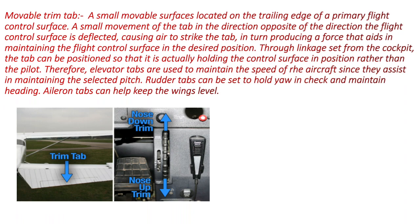Similarly, when the aircraft deflects from the level flight attitude and its nose moves up, the pilot sets the control wheel in the nose down trim position so that the trim tab moves up. The air strikes the trim tab and the aerodynamic forces move the elevator down. By moving the elevator down, the aircraft's nose moves down so that the aircraft maintains its level flight attitude.